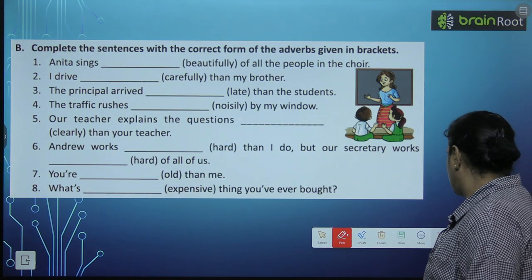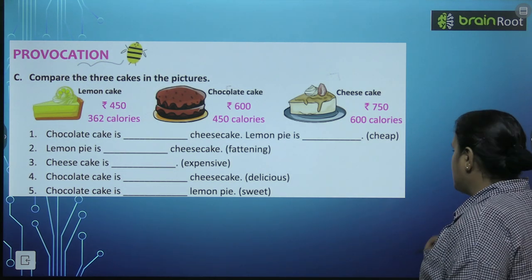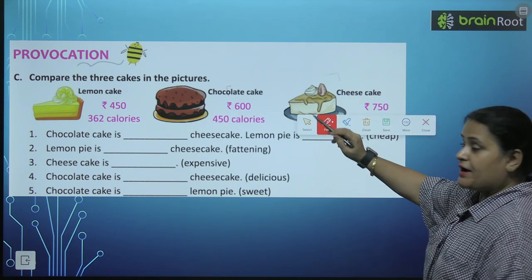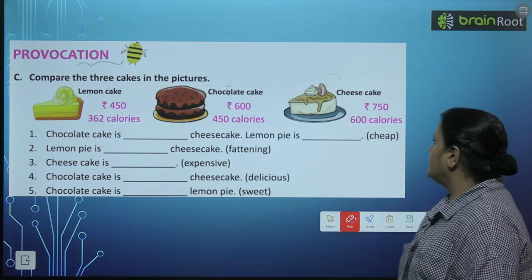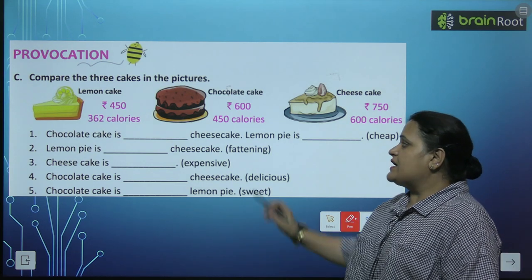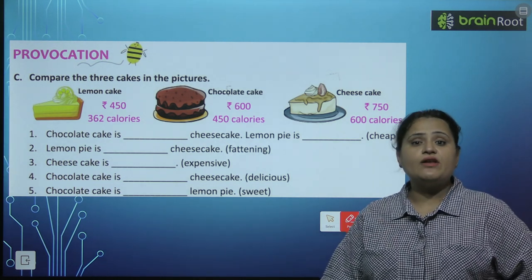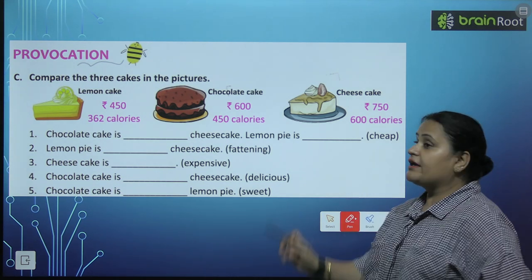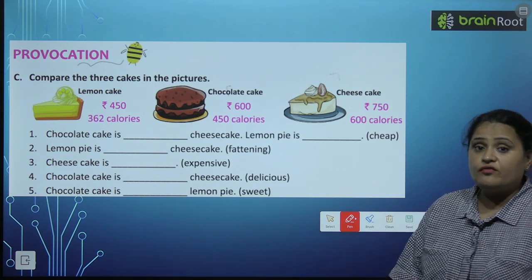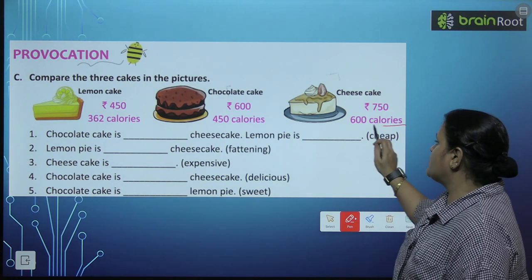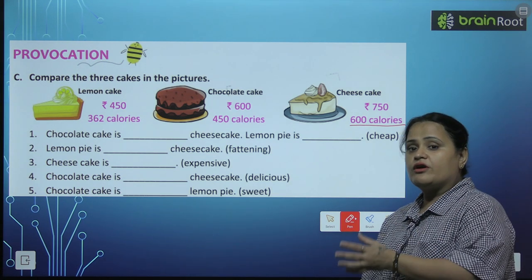I hope ke aapko samajh mein aa raha hoga bacho. Chaliye aage chalte hain. We have now Exercise C: compare the three cakes in the picture. Yahan par aapko three cakes diye hue hain: lemon cake (450 rupees, 362 calories), chocolate cake (600 rupees, 450 calories), and cheese cake (750 rupees, 650 calories). Yahaan hum inkacomparison karenge aur uske according sahi degree of adverb put karenge.